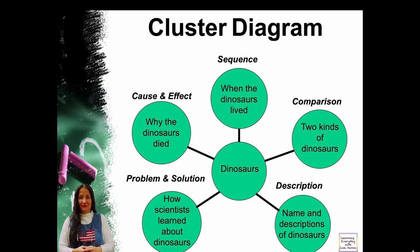In this clustered diagram, we're talking about dinosaurs. It could be sequencing — when the dinosaurs lived; a comparison — two kinds of dinosaurs; a description — names and descriptions of dinosaurs; a problem and solution — how scientists learned about dinosaurs; cause and effect — why the dinosaurs died.